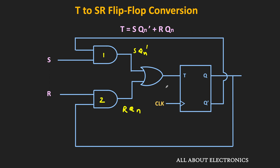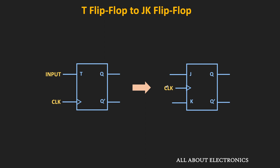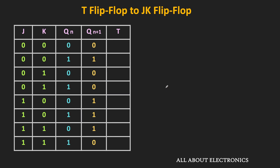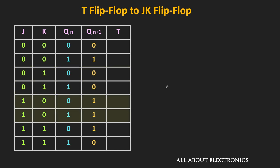Similarly, let us now see how to convert the T flip-flop into the JK flip-flop. Since the JK flip-flop is our required flip-flop, let us first write down its truth table. For the JK flip-flop: when both inputs are 0, the flip-flop retains its current state; when J=0 and K=1, it resets to 0; when J=1 and K=0, it sets to 1; and when both inputs are 1, the output toggles — so if Qn is 0 it becomes 1, and if Qn is 1 it becomes 0.